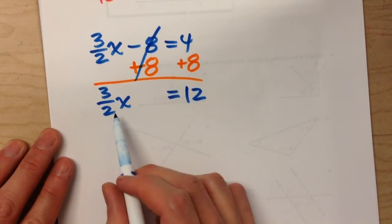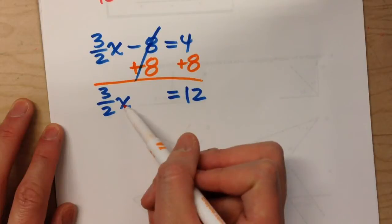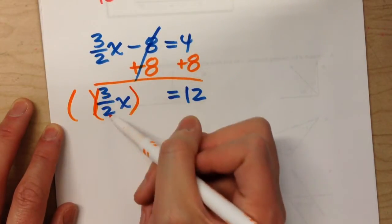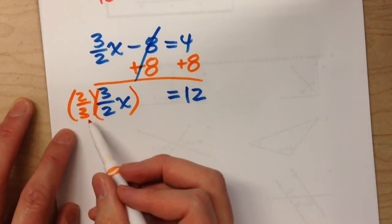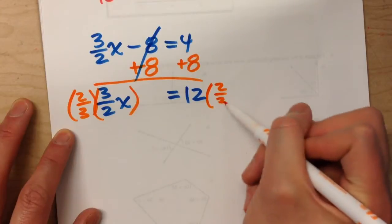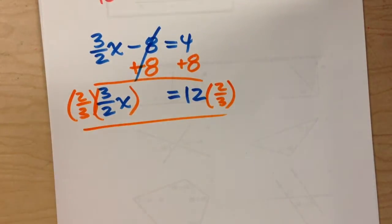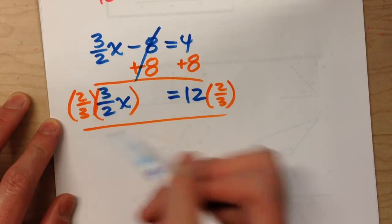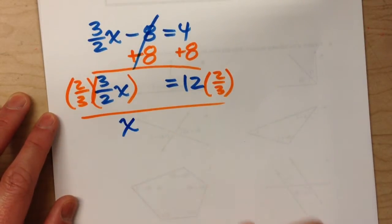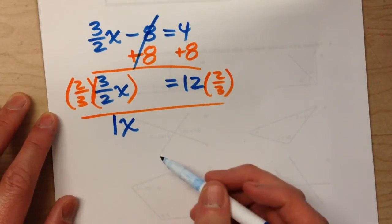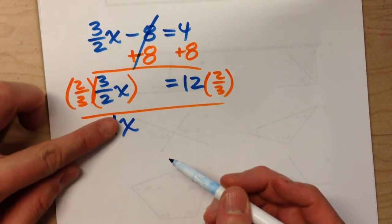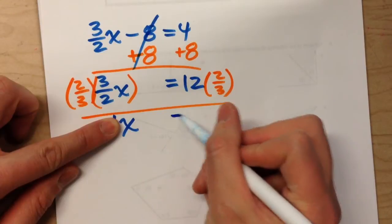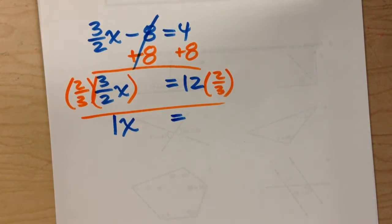Now, to undo this fraction, we're going to multiply the whole thing by the reciprocal. The reciprocal of 3 over 2 is 2 over 3. But what we do to one side, we have to do to the other. 2 thirds times 3 halves is one whole, so what we end up with on the left side is one whole x.